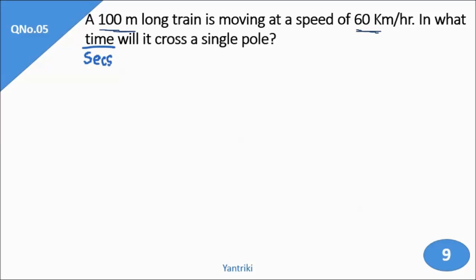So if you look at 60 km per hour, if I multiply 60 by 5/18, then this will be converted to meters per second. For those who don't know, I will explain: if you have km per hour and want to convert to meter per second, you multiply by 5/18.